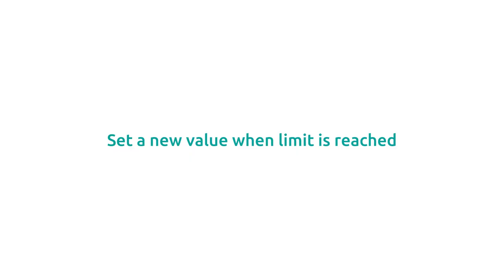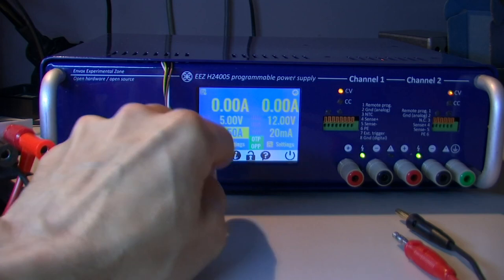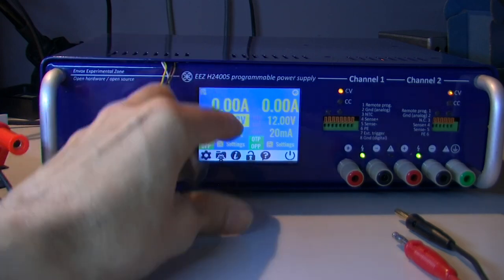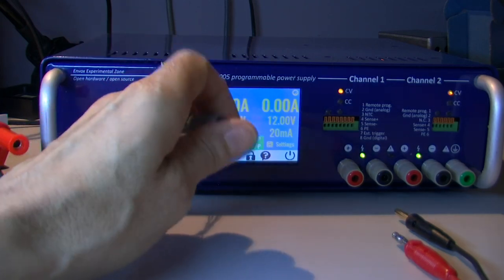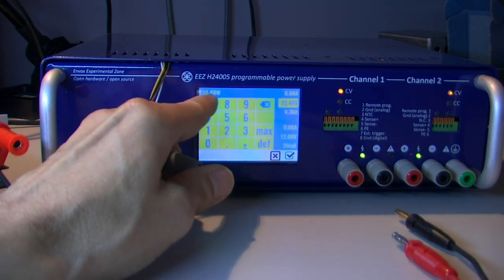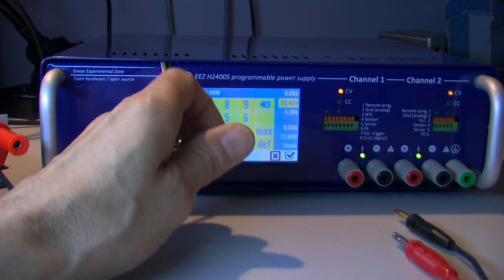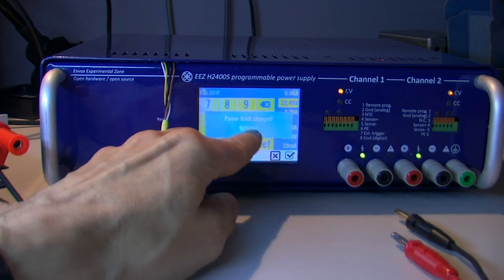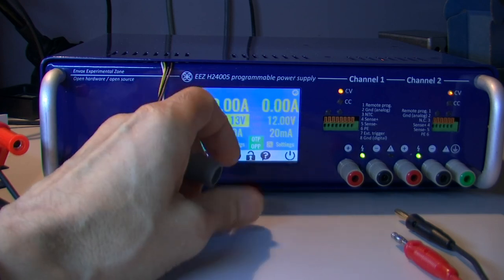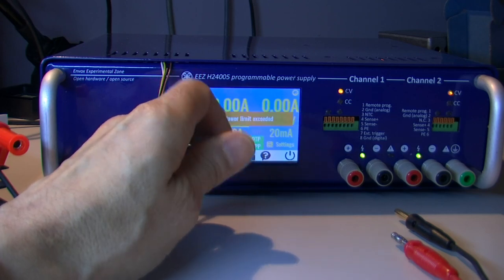You can also see what will happen if we exceed the maximum power limit. For example, I'll just try to go much higher like this. Okay, and here I can hit 100 watts, and I can go directly with the encoder. And now we've already exceeded the power limit and there is no possibility to increase it anymore.